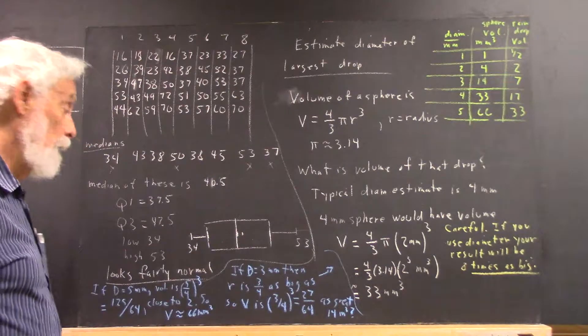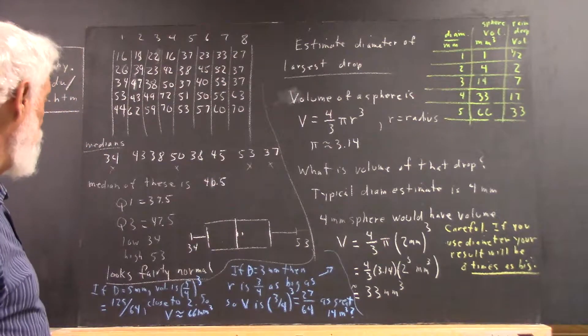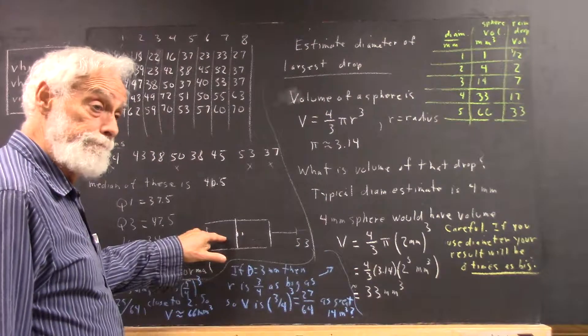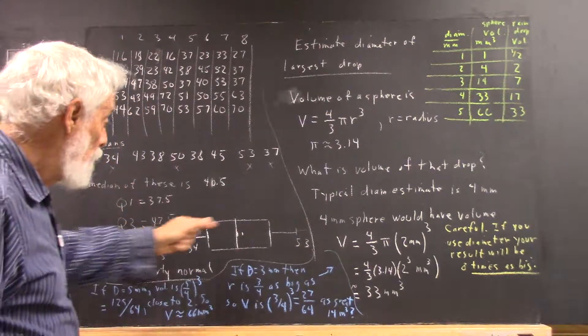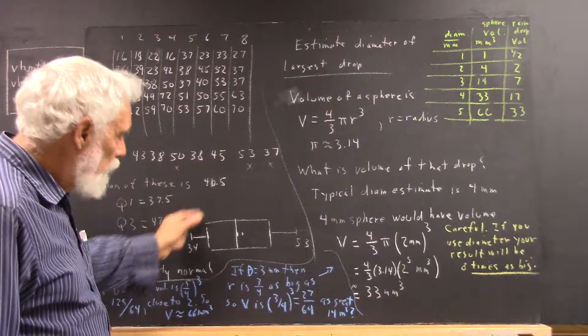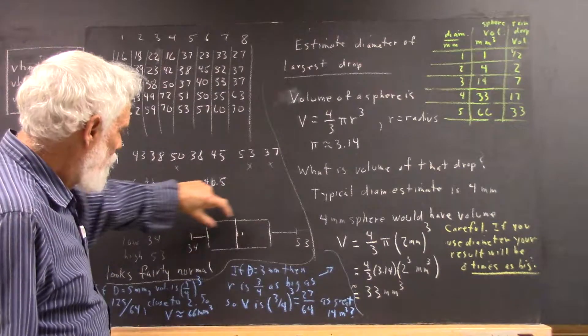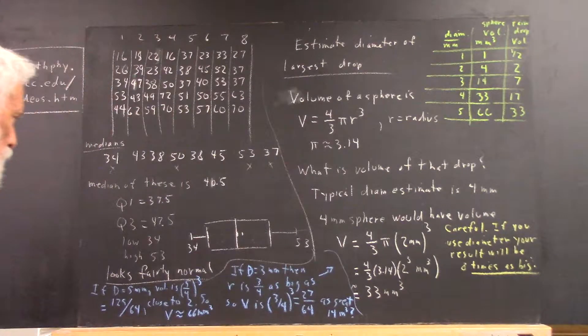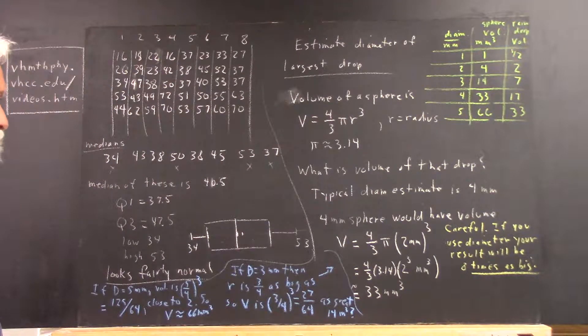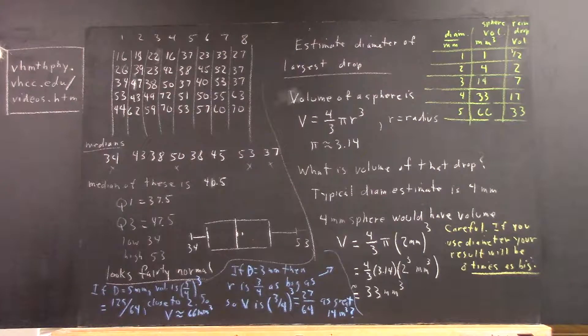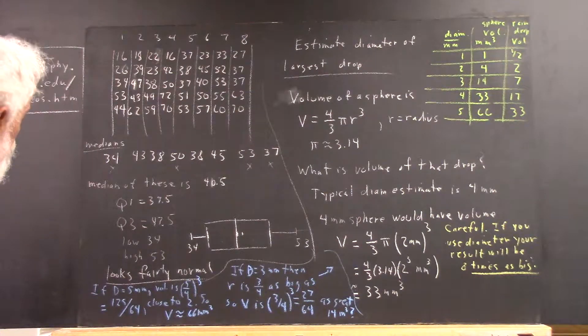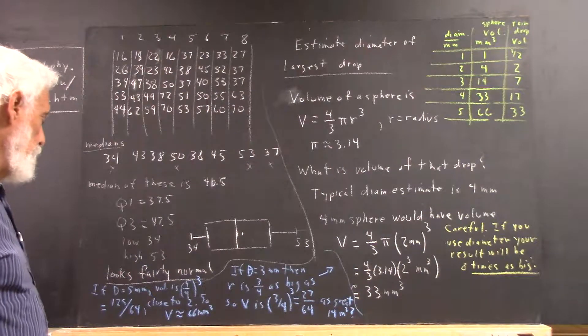Now, I'm going to ask you to do that for homework on some other observations. And this looks fairly normal. It looks fairly normal. It's fairly symmetric, and the length of the tails and the lengths of these parts of the boxes are reasonably consistent. Now, does that really imply that the distribution is normal? Well, it could.